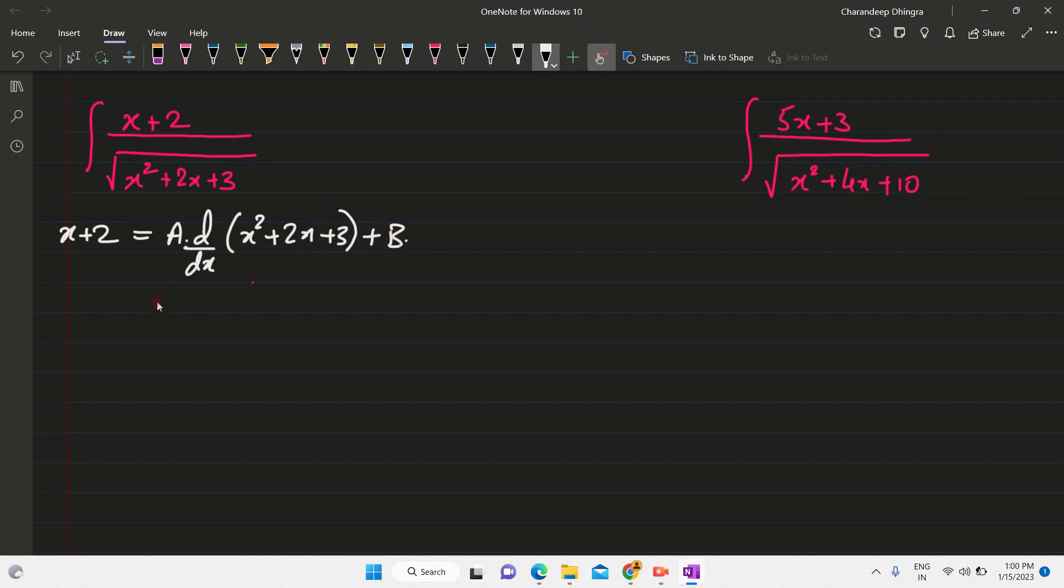You write this and then you manipulate and you get the value of A and B. So what you do is you compare the coefficients of x. So on the left side, the coefficient of x is 1. On the right side, the coefficient of x is, when you take the derivative, you will get A into 2x plus 2 plus B. So the coefficient of x will be 2A. So A will be equal to half.